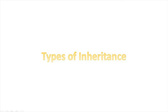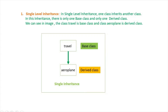Types of inheritance. In single level inheritance, one class inherits another class. There is only one base class and only one derived class. We can see in the image that class Travel is the base class and class Aeroplane is the derived class. There is only one base class Travel and only one derived class Aeroplane. This is single level inheritance.